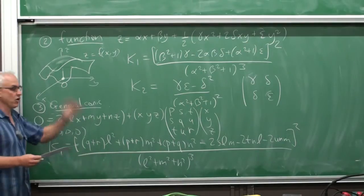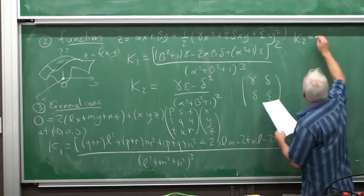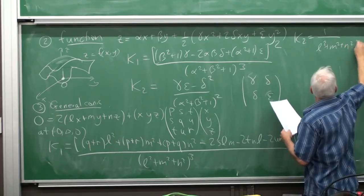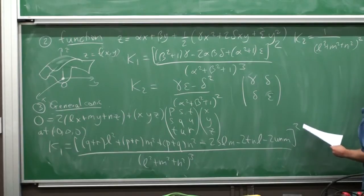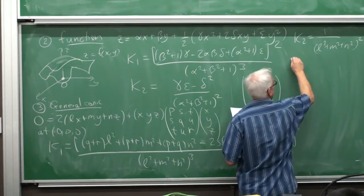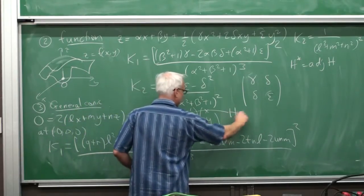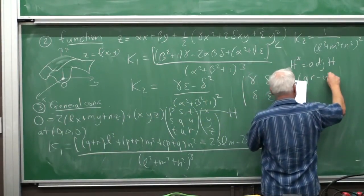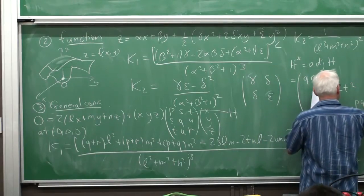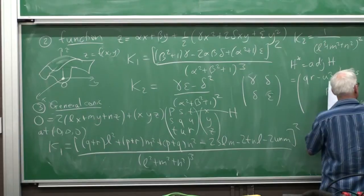The Gaussian curvature K₂ is 1 over (L² + M² + N²)², times the vector (L, M, N) times H* times (L, M, N) transpose, where H* is the adjugate of H. The adjugate has diagonal entries QR − U², PR − T², PQ − S², and off-diagonal entries TU − RS, SU − QT, and ST − PU.